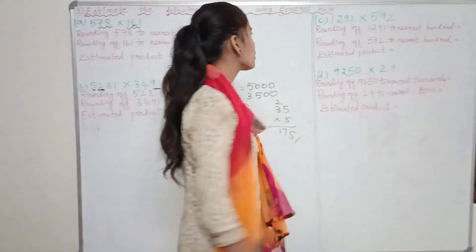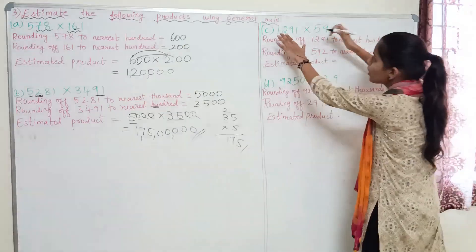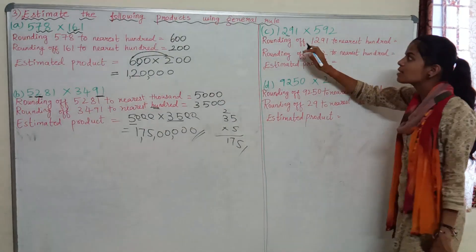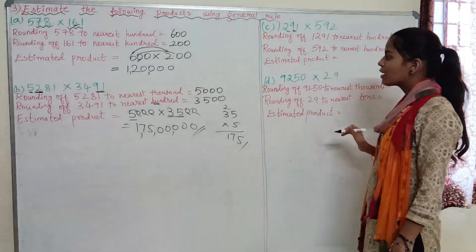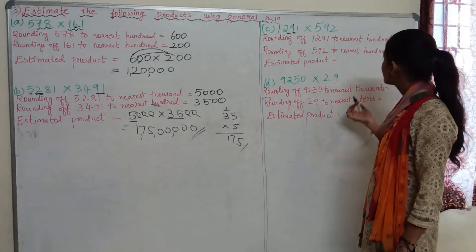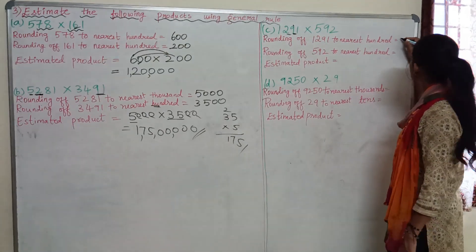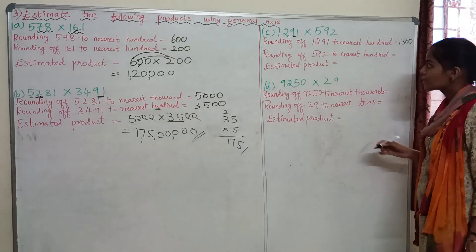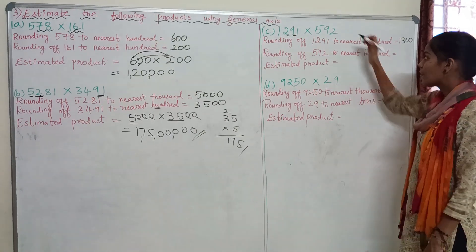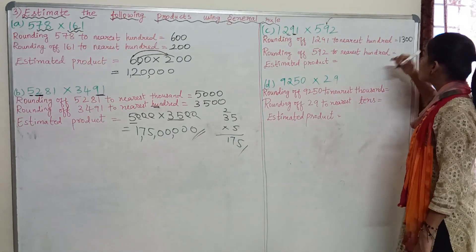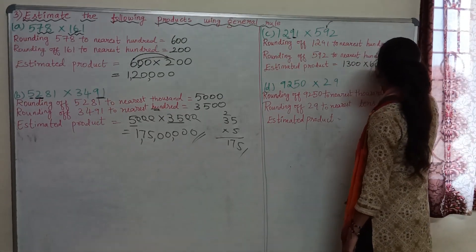Next, coming to our third portion. Rounding off 1,291 to the nearest hundred — look at the tens place. The number 9 is greater than 5, so we round up to the upper number, which is 1,300. Next, 592: rounding off to nearest hundred, 9 is greater than 5, so we round up to 600. So we have 1,300 × 600.